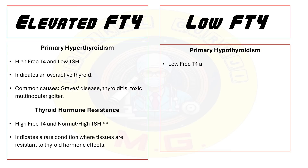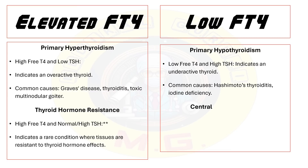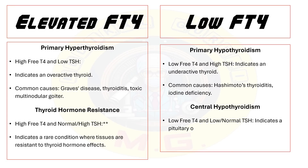Low free T4 levels along with high TSH are found in primary hypothyroidism, indicating an underactive thyroid. Common causes include Hashimoto's thyroiditis and iodine deficiency. Central hypothyroidism presents with low T4 and normal or low TSH, indicating a pituitary or hypothalamic disorder that affects thyroid hormone production.